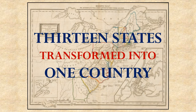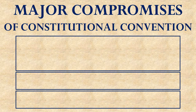To get to that point of proposing an entirely new government, they had to get around some significant conflicts at the convention and enter into some very important compromises. The rest of this lesson is going to be talking about what those major compromises were at the Constitutional Convention.